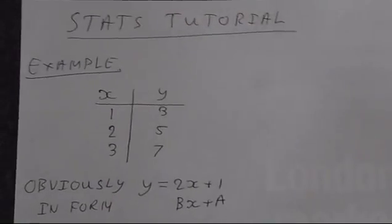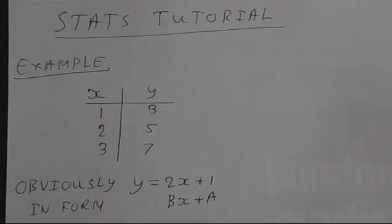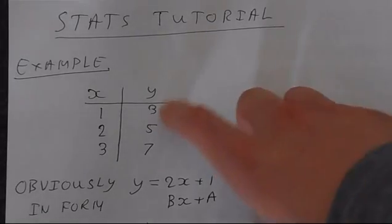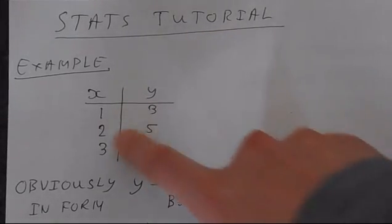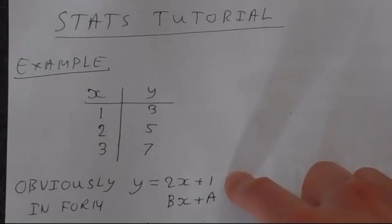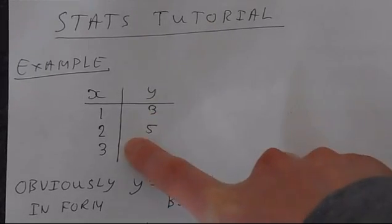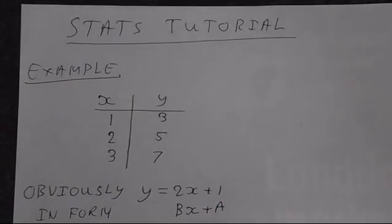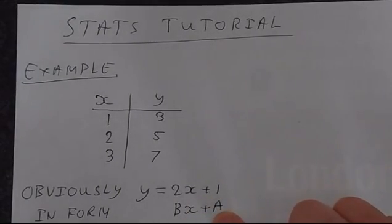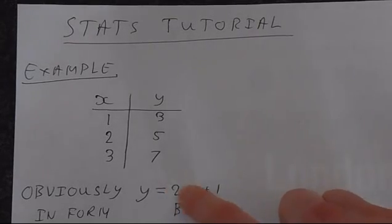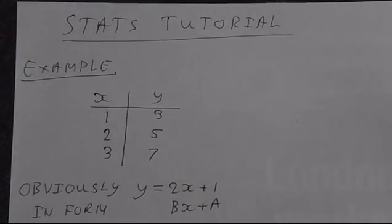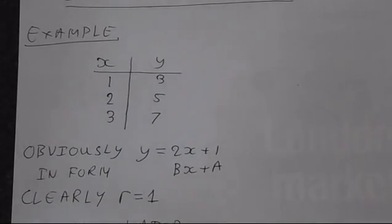So the best way to see how to do this on the calculator is to just do an example straight away. So we've got x is 1, 2, 3 and then on y we've got 3, 5, and 7. If you look closely you'll probably notice that y equals 2x plus 1. So 2 times 1 plus 1 is 3. 2 times 2 plus 1 is 5. And this equation is in the form bx plus a. This is how the calculator understands it. So b would be 2 and a would be 1. So when we do the calculation we're finding b and we're finding a, and then we're substituting it in and we should get this equation here. And clearly r is going to be equal to 1 because all of these points lie perfectly on the line y equals 2x plus 1.